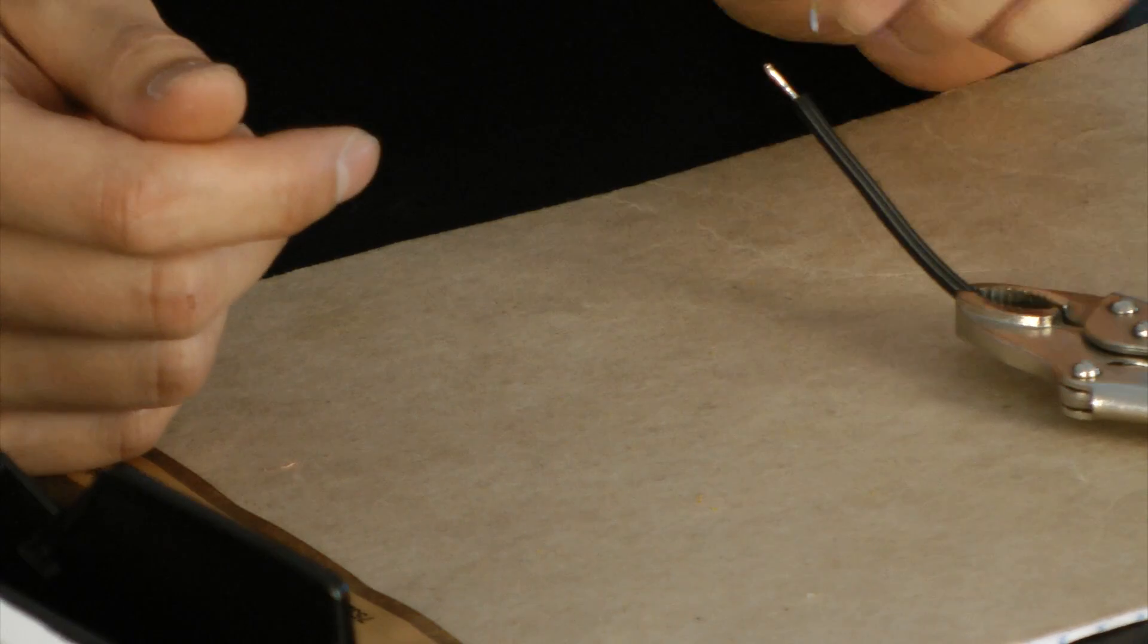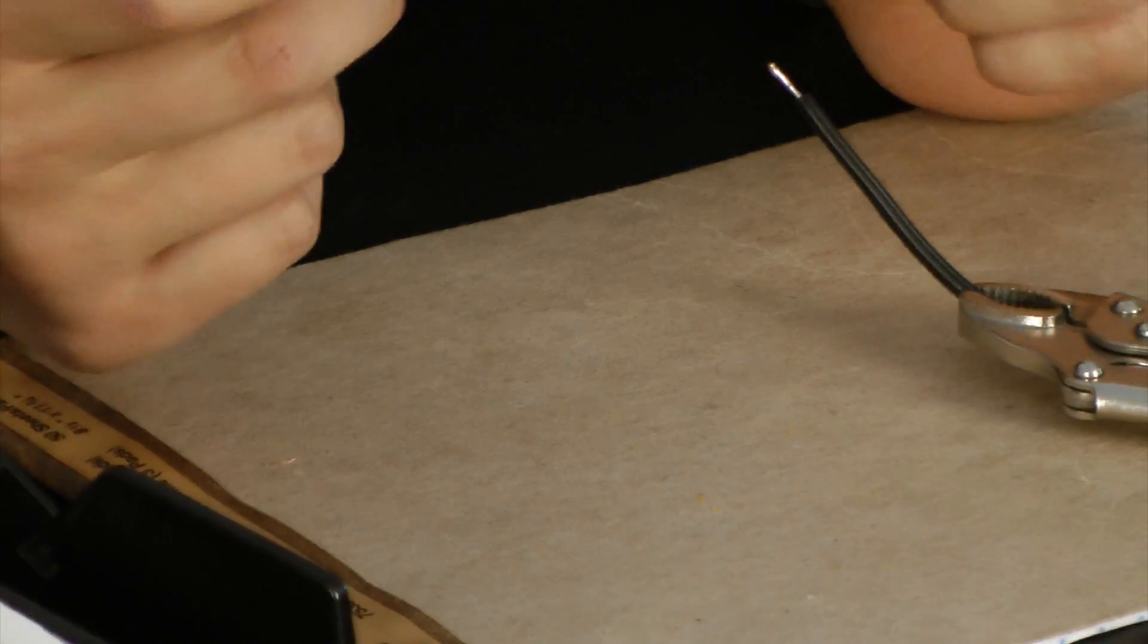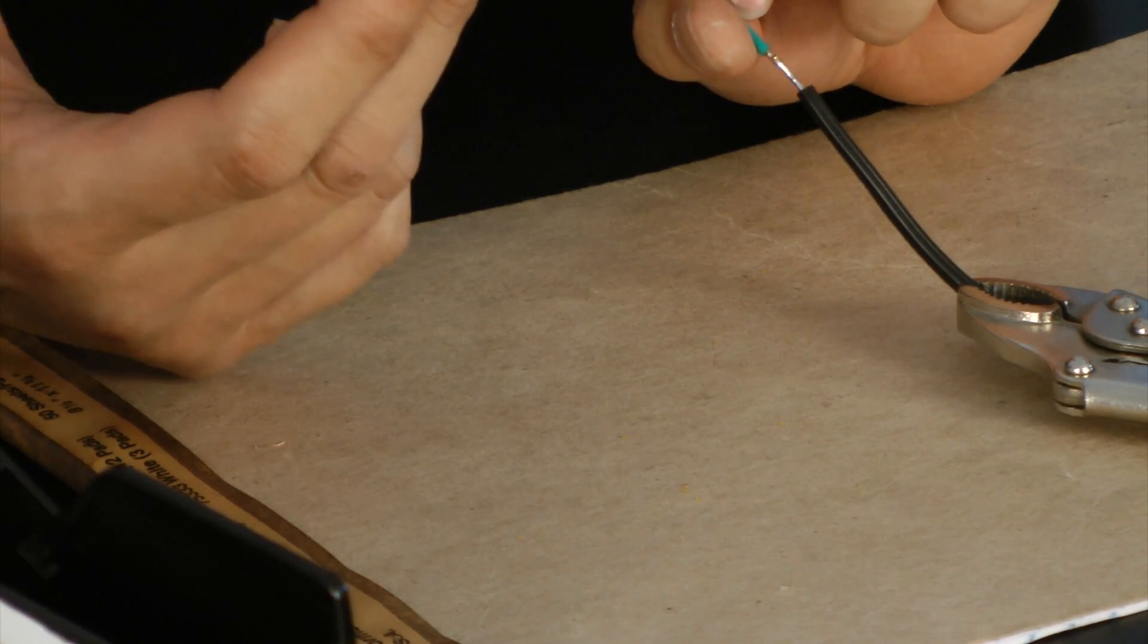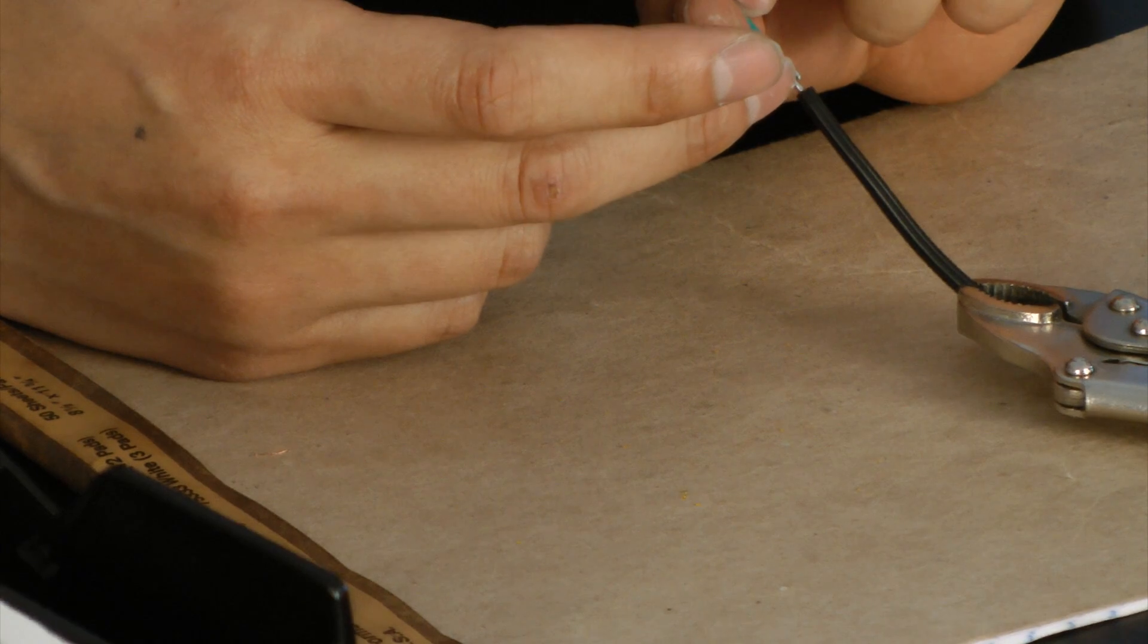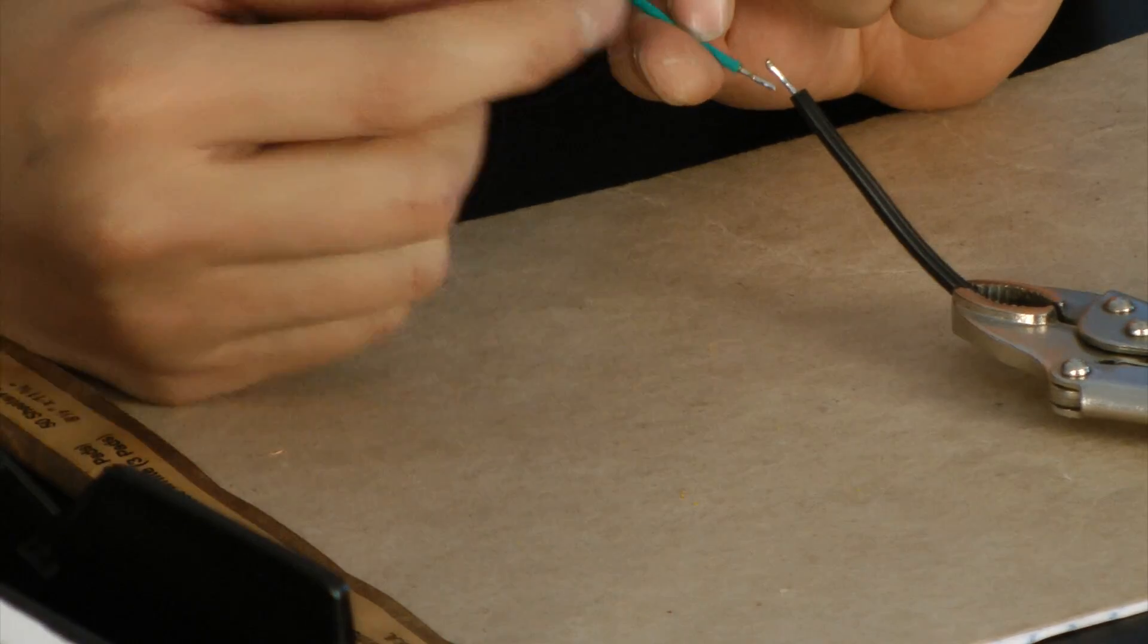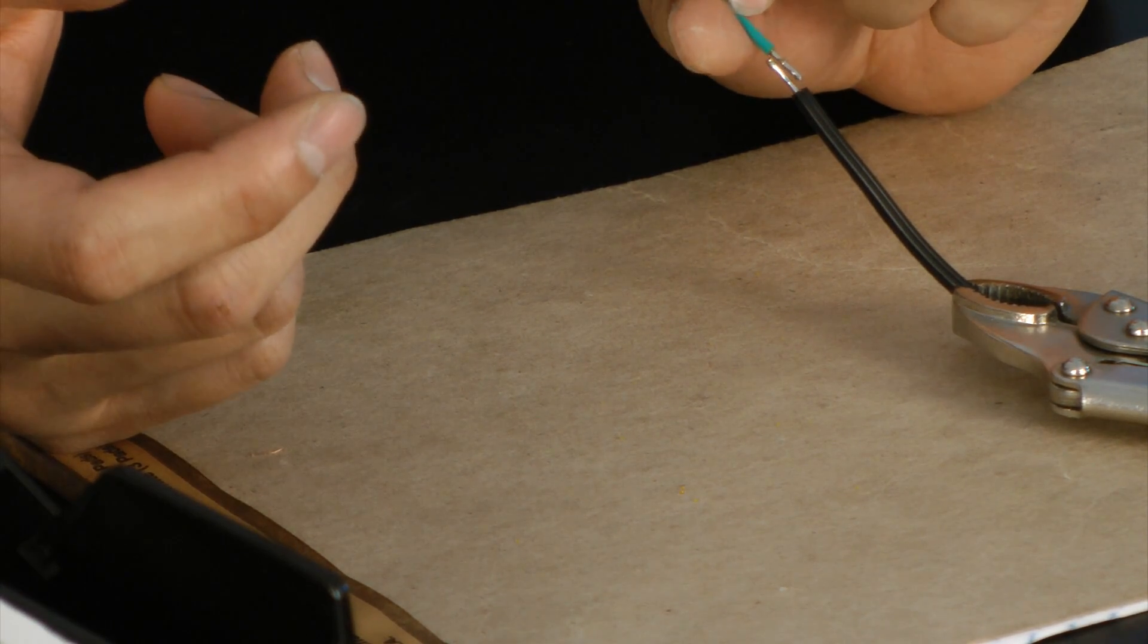With cold joints, what could happen over time with vibration or just over time in general, the wires will actually separate from the solder. And then with a cold joint, you'll have a loose connection or intermittent connection.